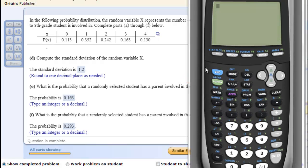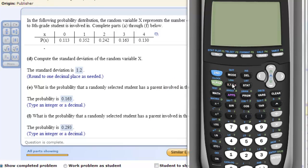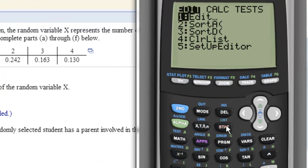In this video we're going to use the TI calculator to compute the mean and standard deviation of a discrete random variable. Here we have the following probability distribution and we need to type that information into our L1 and L2 columns. How we get there is we click stat and then edit.